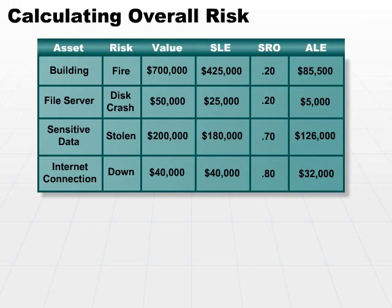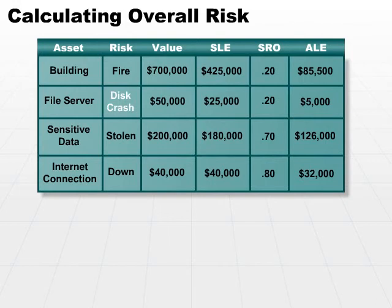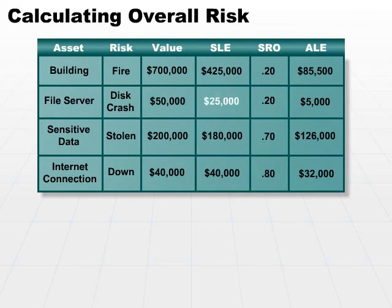This corresponds to what we mentioned a little bit earlier. We have a file server, and the risk is a disk crash. The file server is worth $50,000, and we estimate that if we have a disk crash with a total loss of data, we're going to lose half of our file server value. Again, once every five years is the estimated rate of occurrence, so we would estimate every year a $5,000 loss.